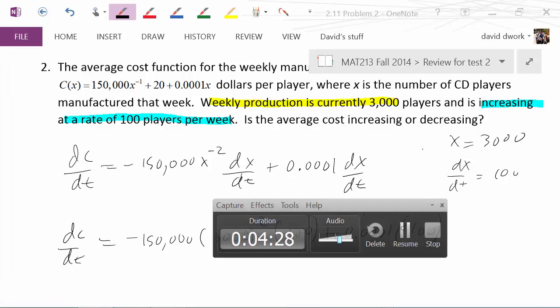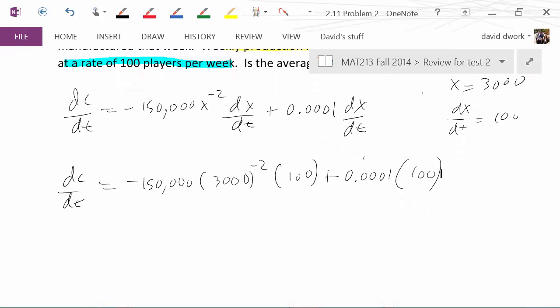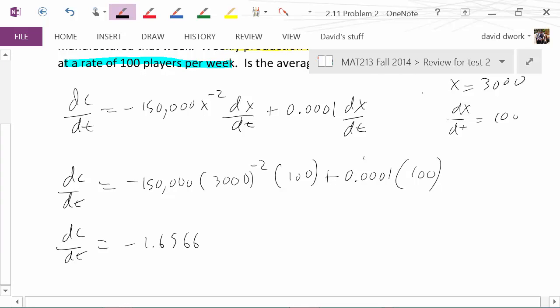And I'll do that off screen. Assuming I typed everything in right, my calculator just spit out negative 1.6566 repeating, which is the approximate. The exact that my calculator would give me in fraction form was negative 497/300.